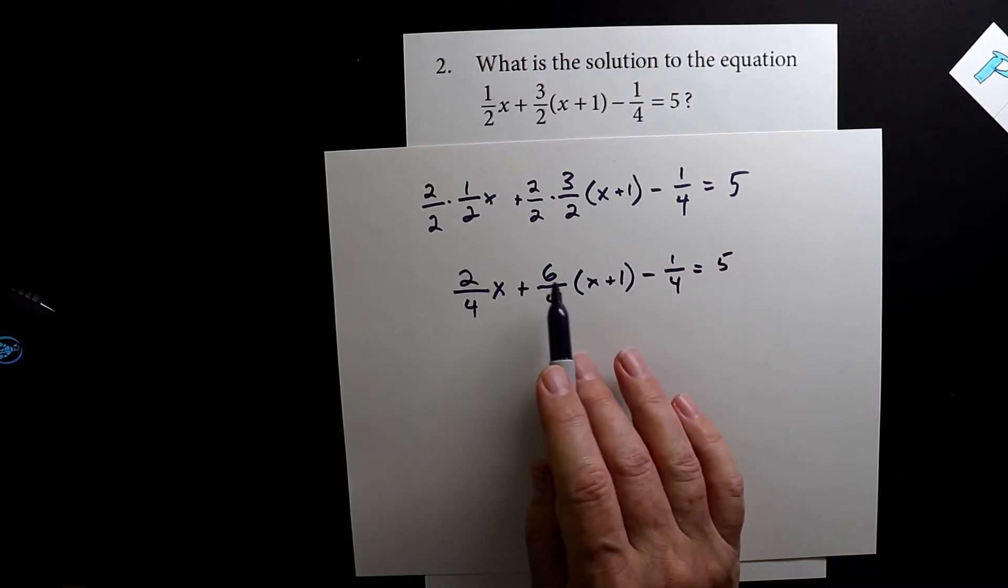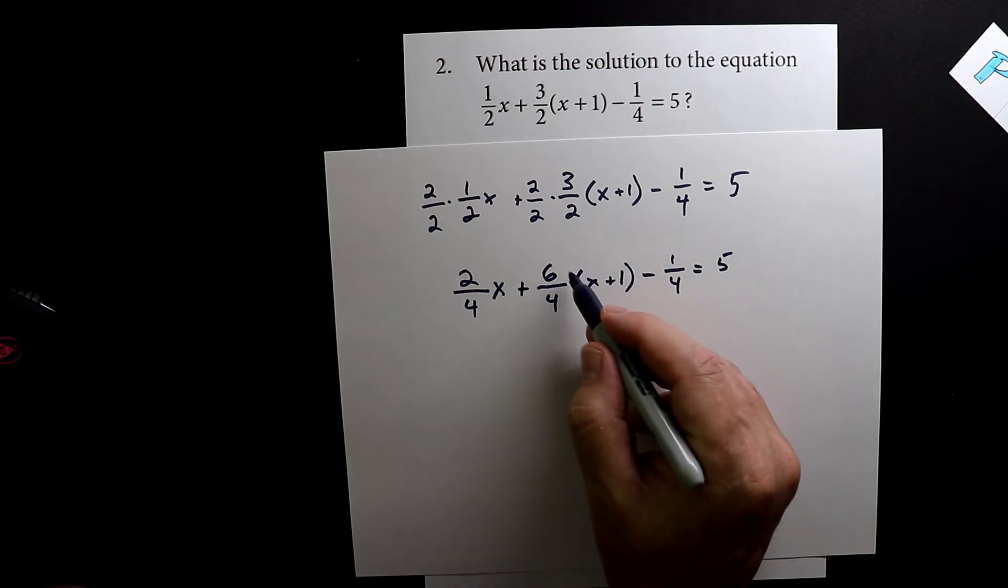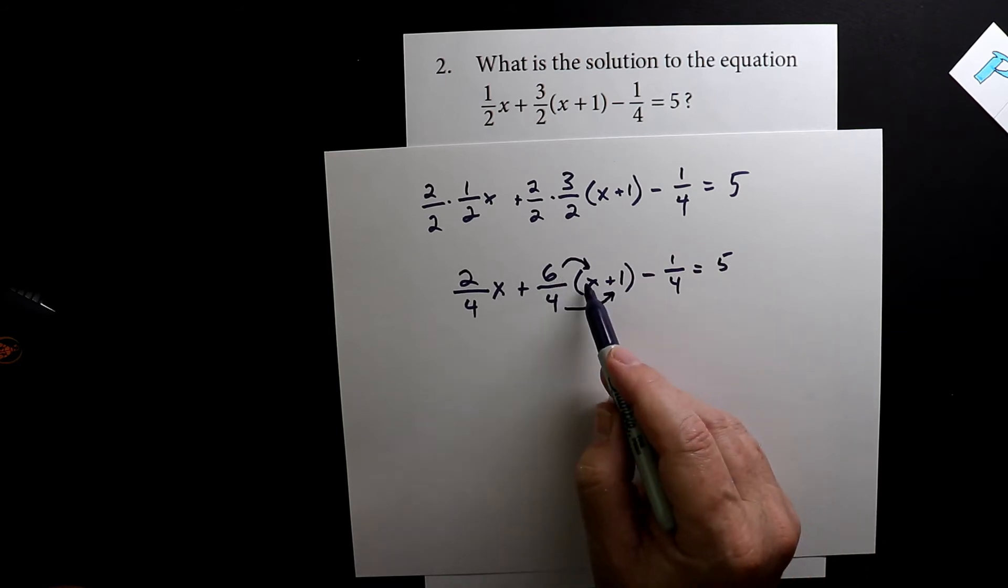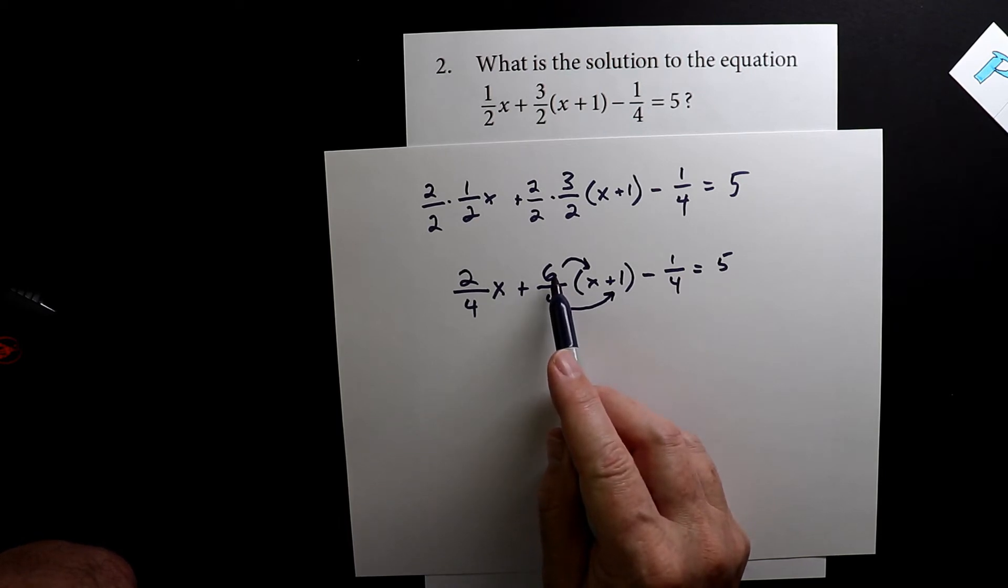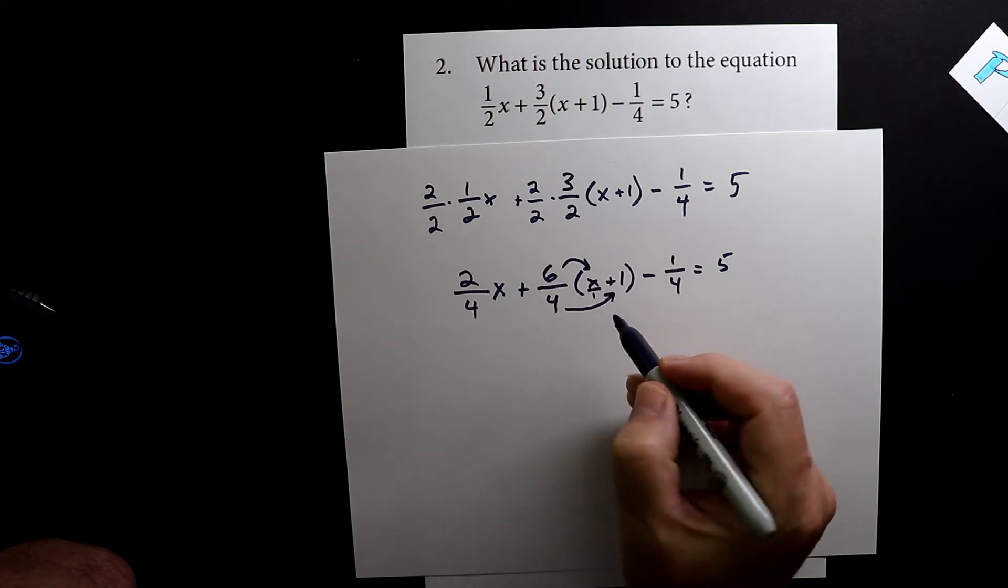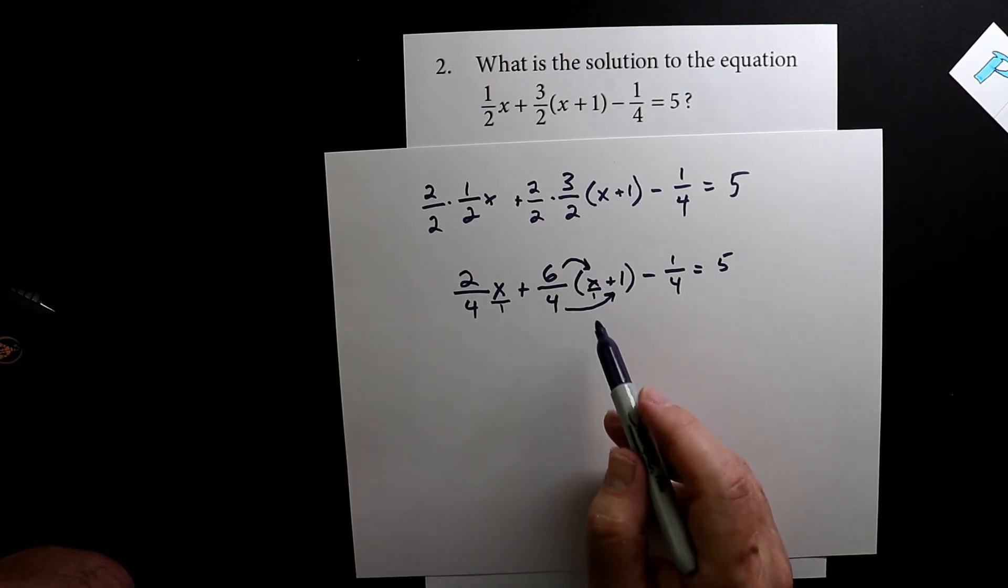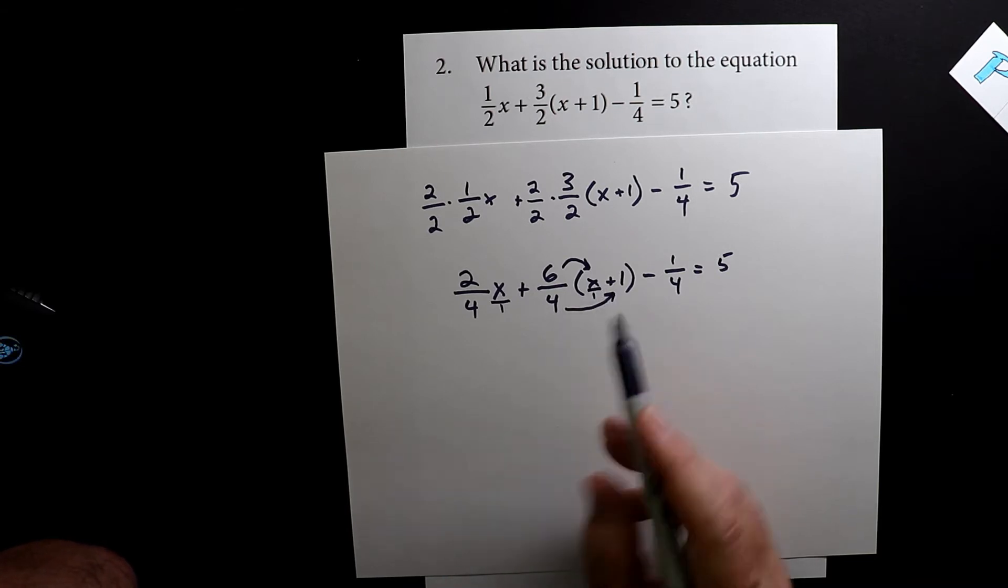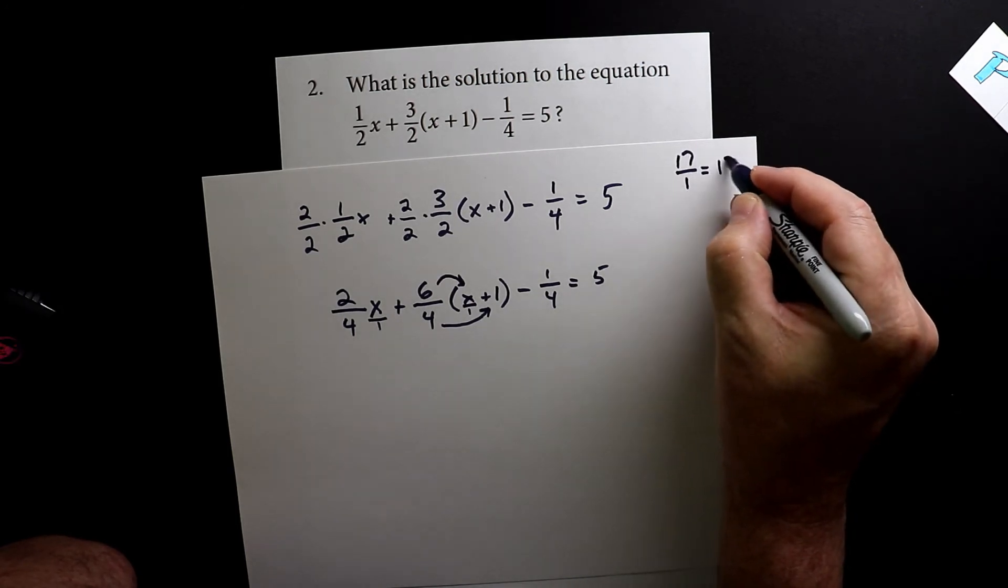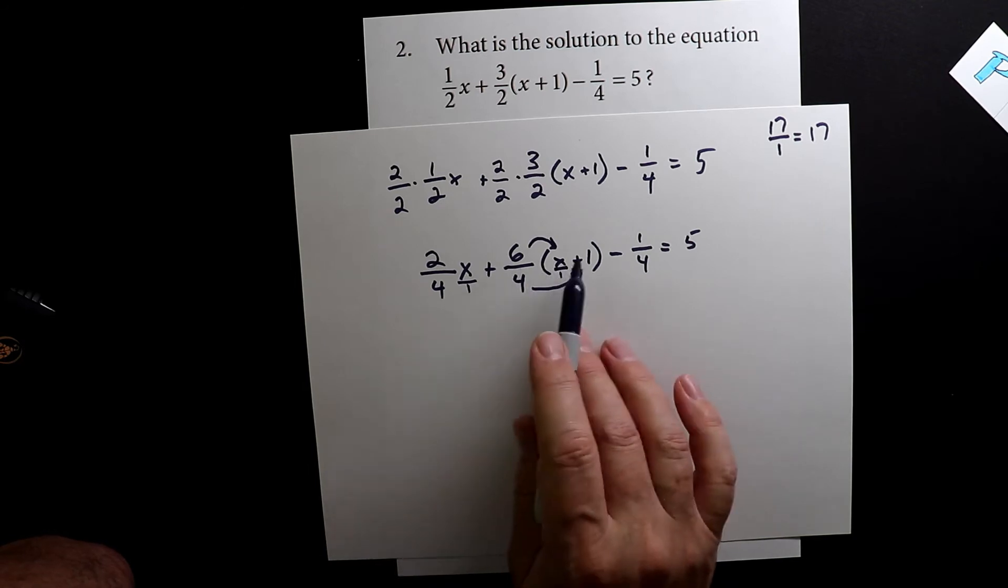Now, the next thing I want to do is I want to distribute this six over four to both of these terms. So we have an x that I want to multiply six over four by, and then I have a one that I want to multiply by six over four. I'm going to throw you for a little bit of a curve. I'm going to turn all of these x's into x over one. This way we can have the x on the top and then the four on the bottom. Because x over one is the same thing as x, just like 17 over one is the same as just 17.